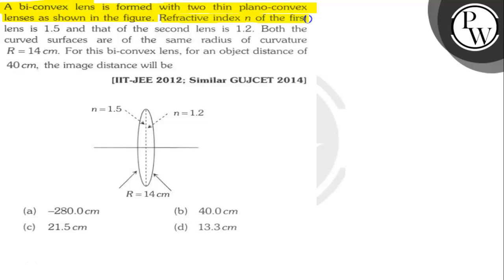Refractive index n of the first lens is 1.5 and that of the second lens is 1.2.